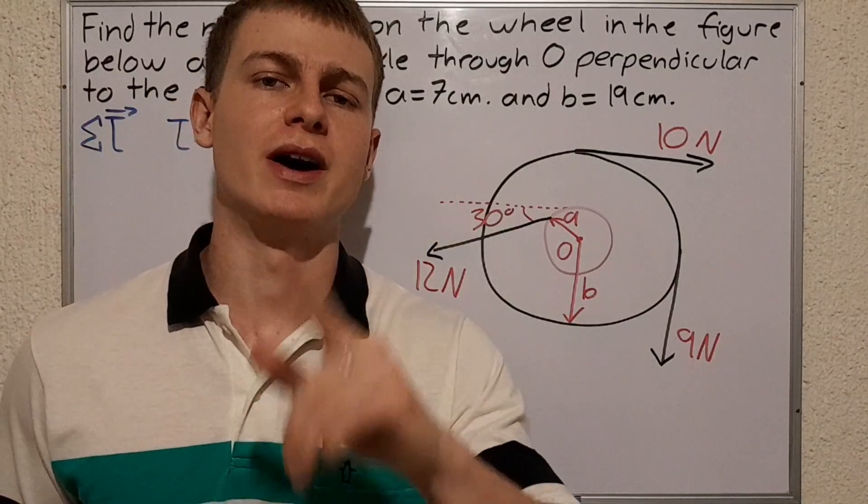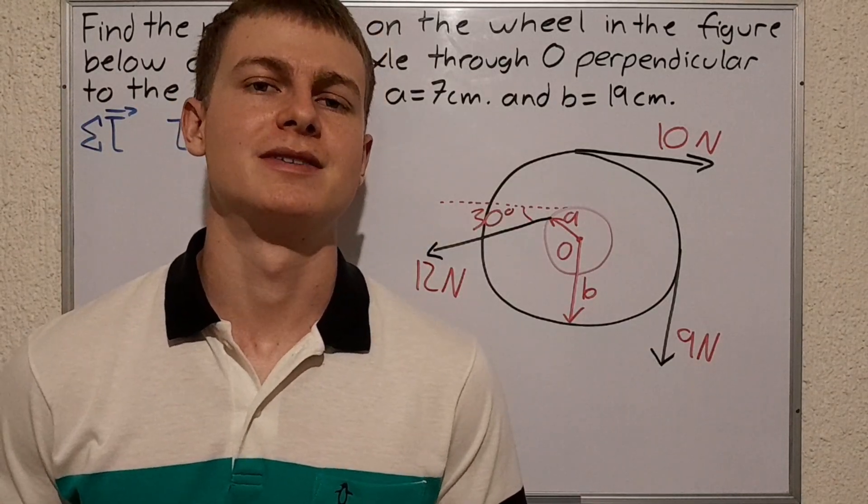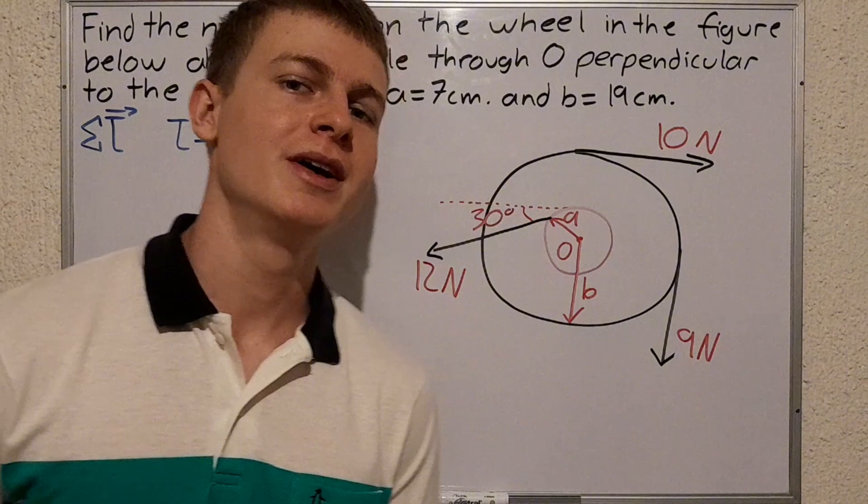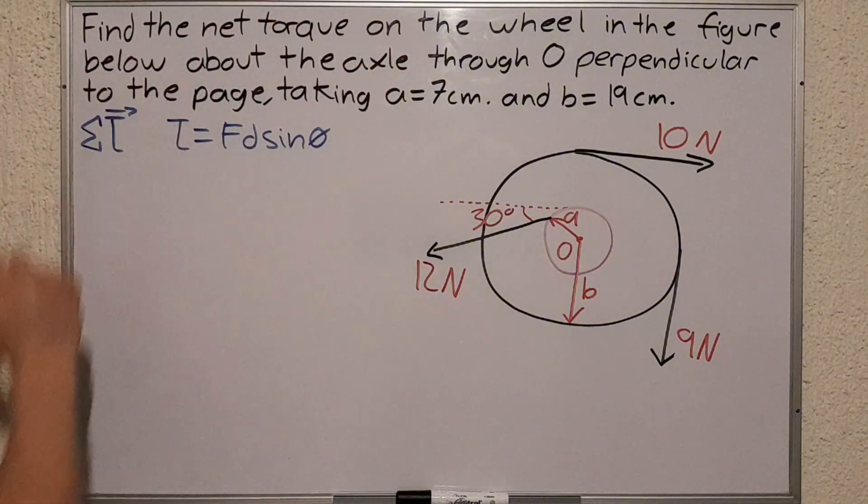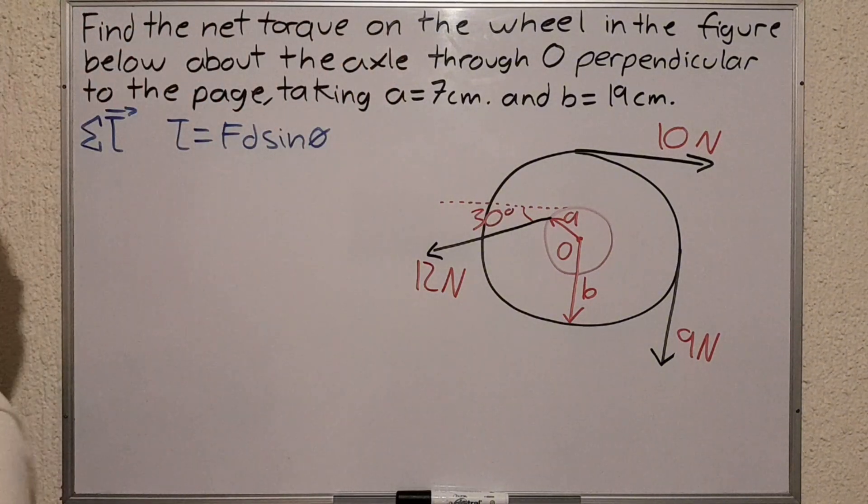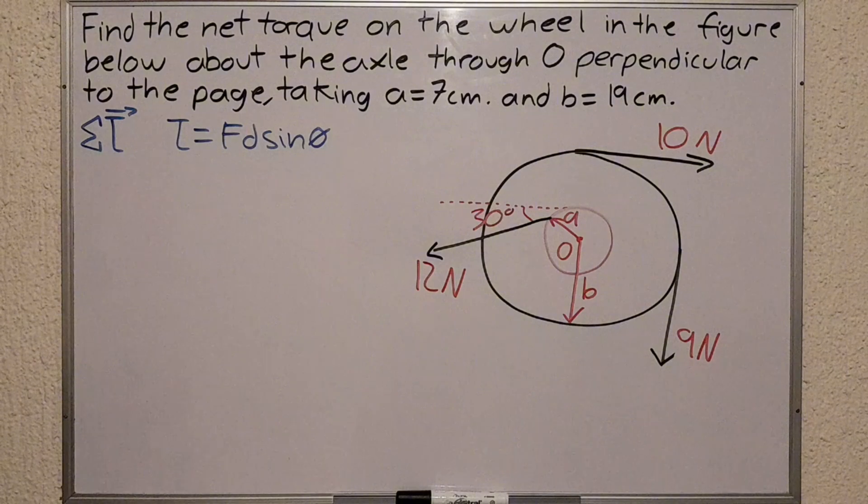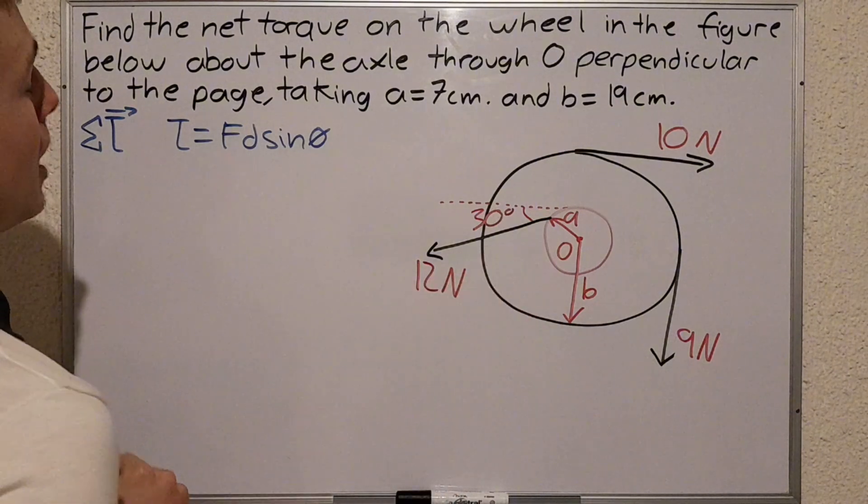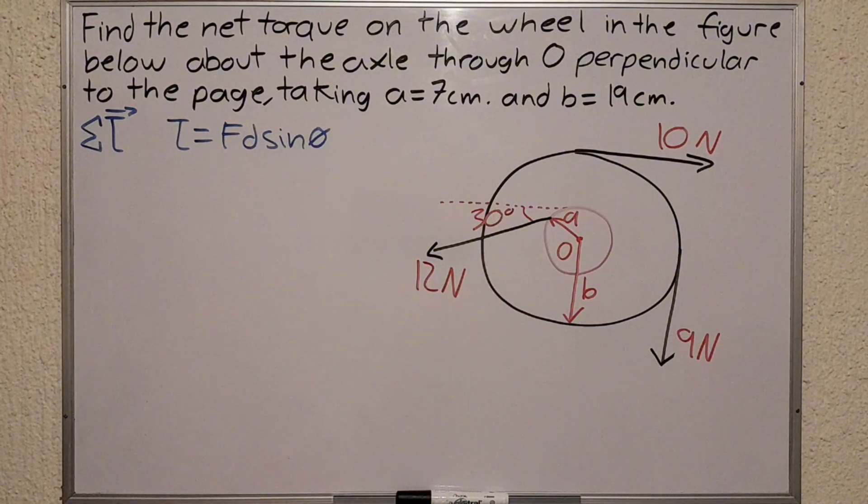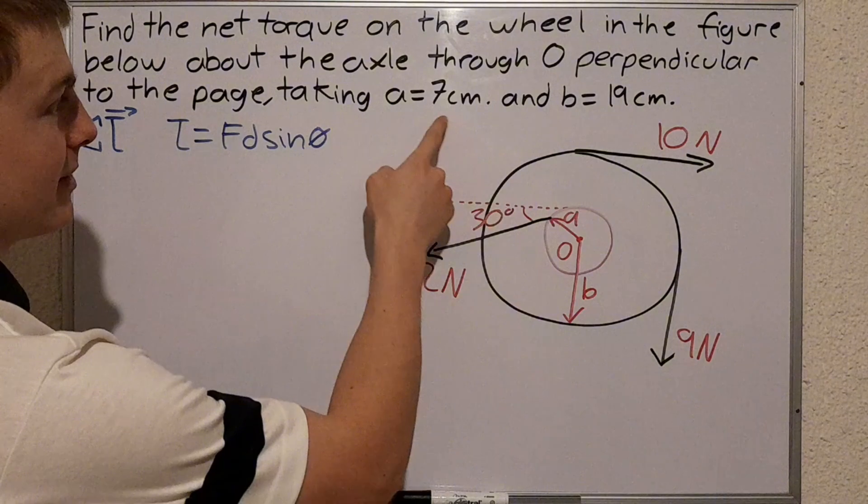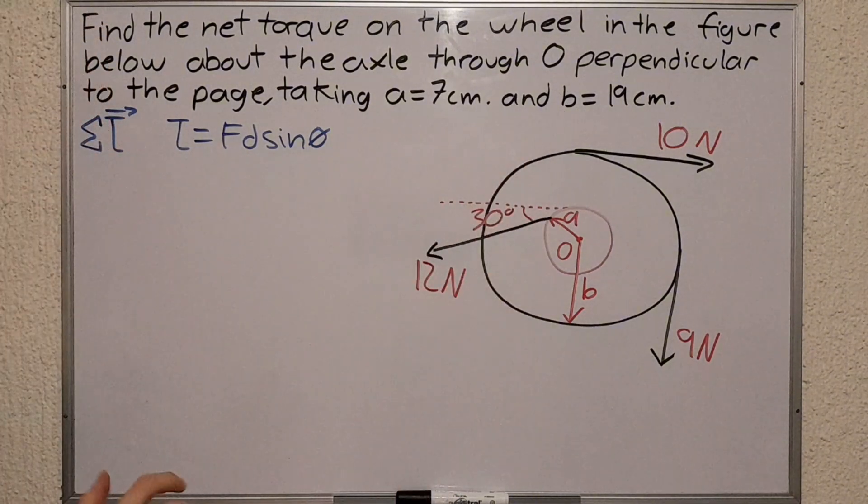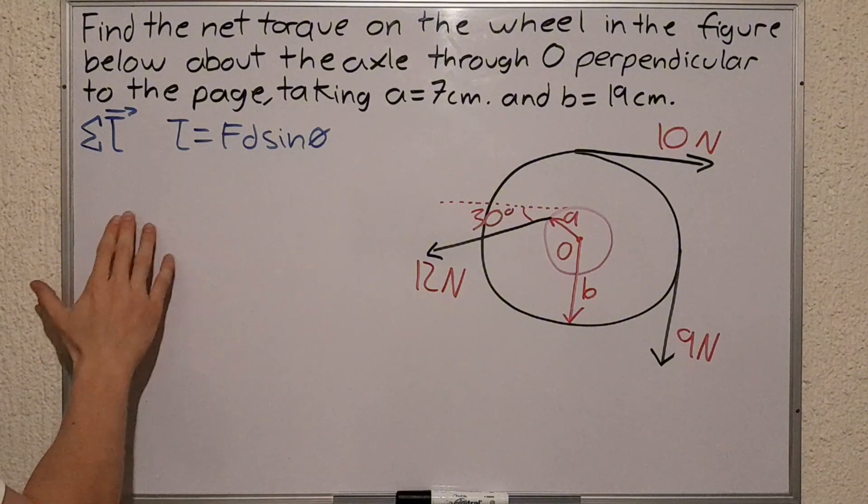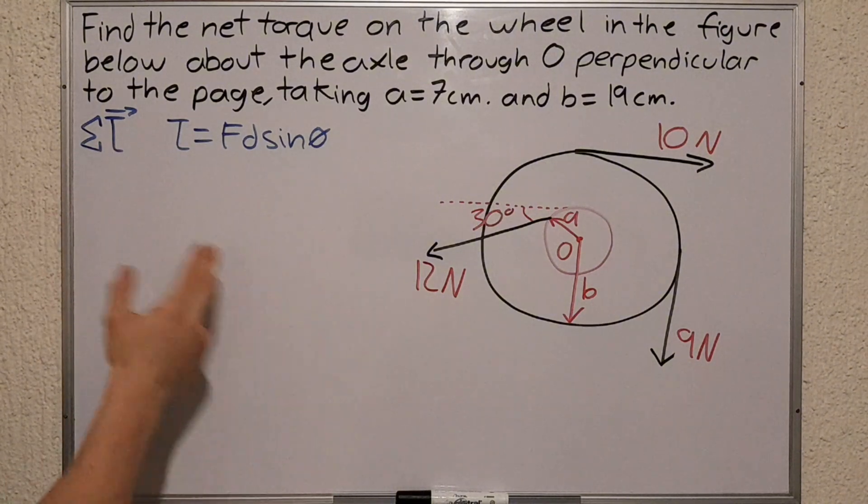Hey, what's up guys? Welcome to another web design problem. This time it's a rotational dynamics problem that says find the net torque on the wheel in the figure below about the axle through O perpendicular to the page, taking A equals 7 centimeters and B equals 19 centimeters.